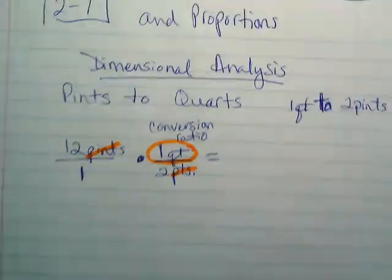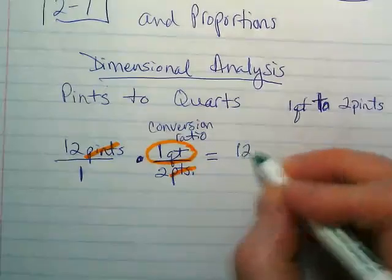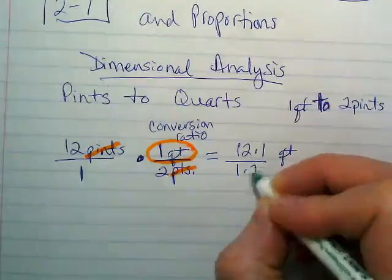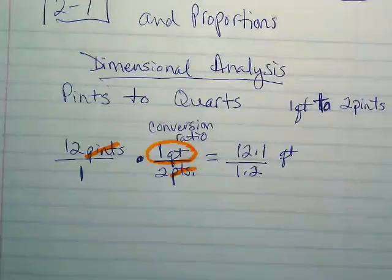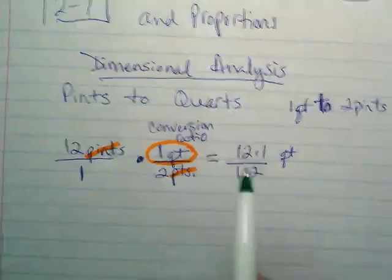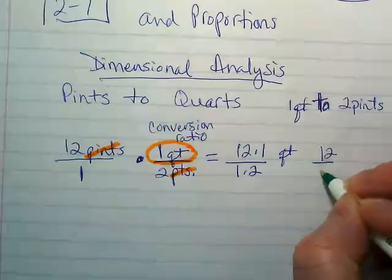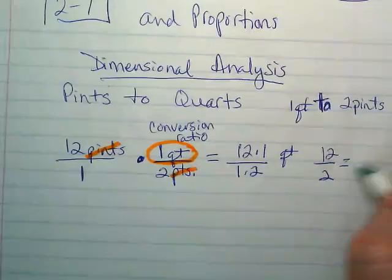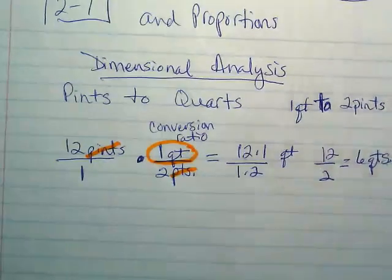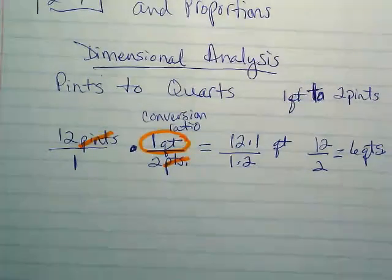Once you've crossed those out and you've kept the label you want, now you can just multiply the numbers. We have 12 times 1 quart over 1 times 2. We multiply straight across. Everything you know about multiplying fractions stays the same here. 12 times 1 is going to be 12. 1 times 2 is going to be 2, and that simplifies down to 6 quarts. And that's our answer. We went from pints to quarts.